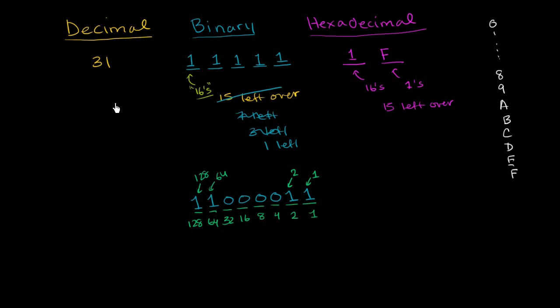So if you wanted to represent this in decimal, it's going to be 128, plus 64, plus 2, plus 1. So let me add that up. So if we have 128, plus 64, plus 2, plus 1, you're going to have 8 plus 4 is 12, plus 2 is 14, plus 1 is 15.